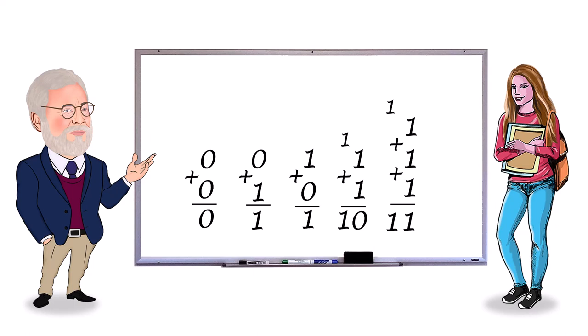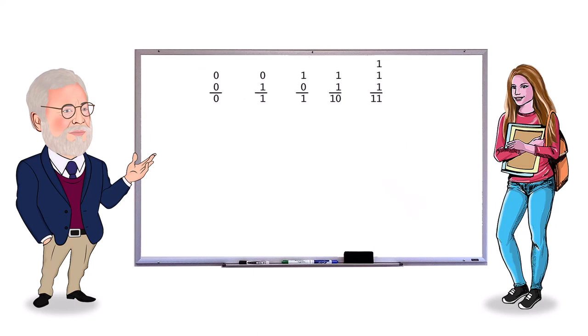There we have our five rules. When adding two binary numbers, if there are only zeros in a column, the partial sum, that's the digit under a column below the line, is zero. If there's a single one, the partial sum is one.